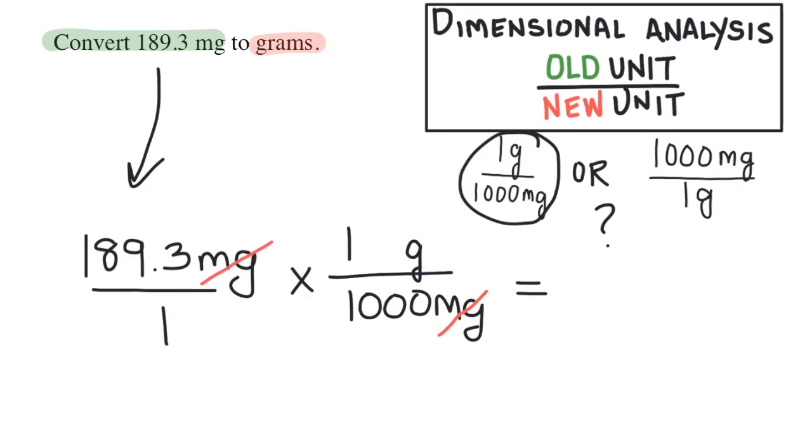So I have 189.3 milligrams times one gram over a thousand milligrams. Multiplying by one over something is the same thing as just dividing by the thing on the bottom. So it's really saying 189.3 divide by 1000. So I get 0.1893. The milligram cancels and I'm left with the unit of gram.